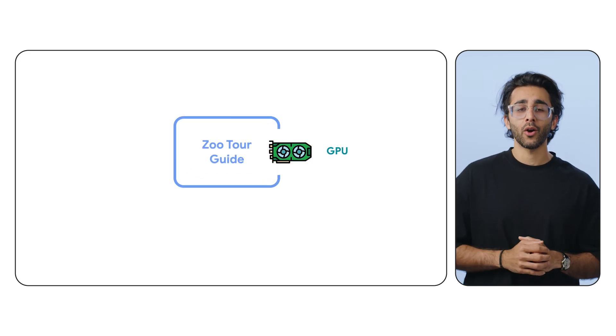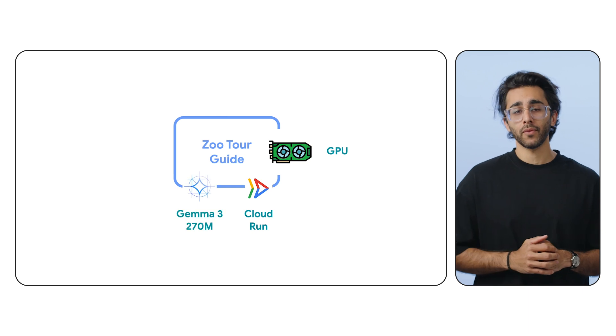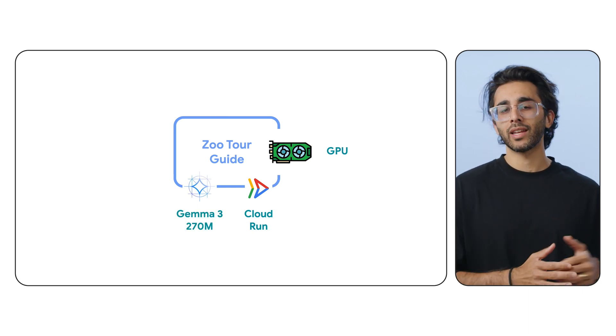Welcome back. In the last video we deployed a dedicated GPU-powered open LLM on Cloud Run using Gemma, so now we have our powerful brain just waiting for instructions. Today we're going to build the agent itself. We'll use the Agent Development Kit, or ADK for short, to create the conversational logic needed to facilitate a thread with a user. Then we'll deploy it as a separate Cloud Run service that talks to our Gemma model.